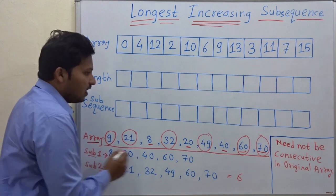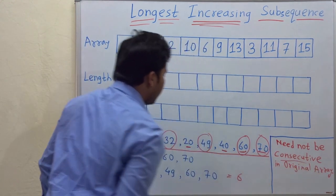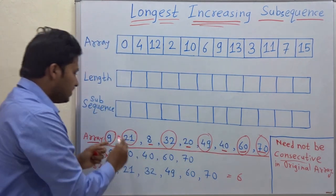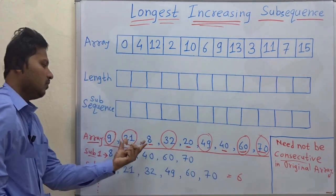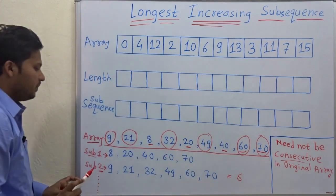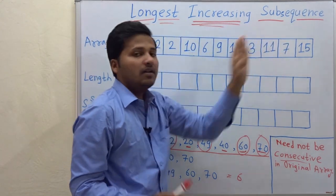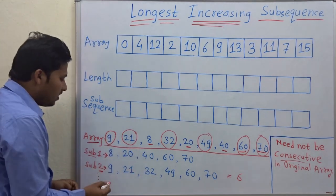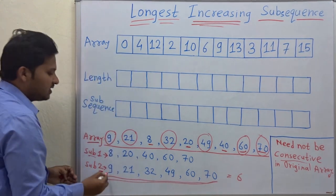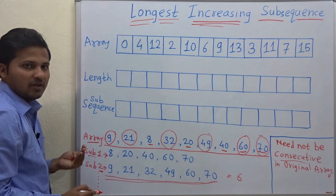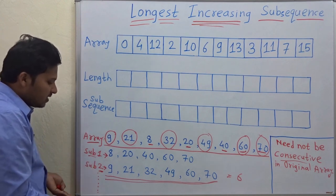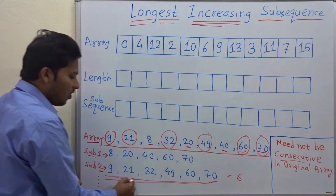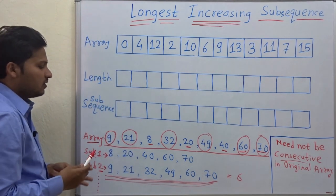This subsequence need not be consecutive in the original array. You can see 9, 21, 32, 49, 60 — they are not consecutive in the array but they form this sequence. That is the meaning: the longest increasing subsequence need not be consecutive in the original array. I have just shown you two subsequences and I am directly saying that this is the longest increasing subsequence.